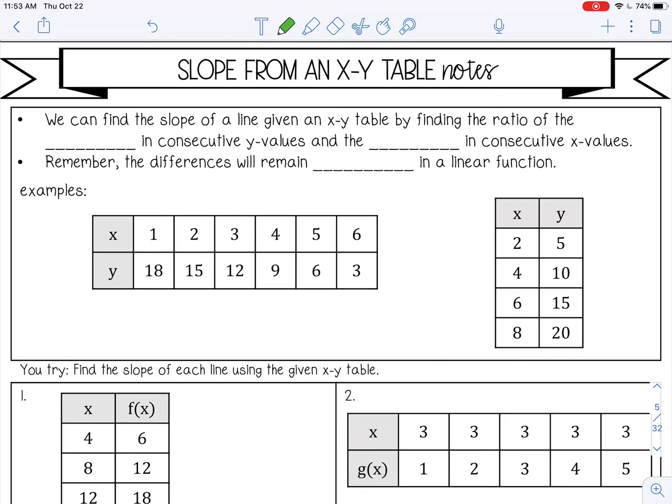Welcome to this lesson on slope from an xy table. We can find the slope of a line given an xy table by finding the ratio of the difference in consecutive y values and the difference in consecutive x values.